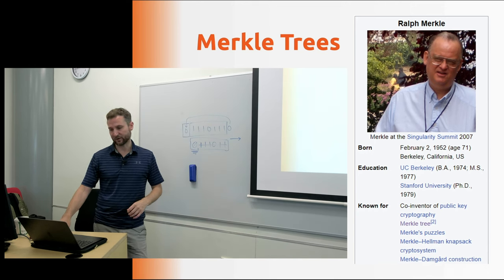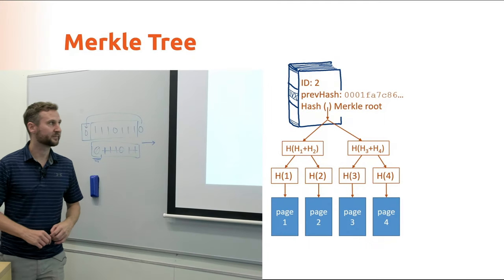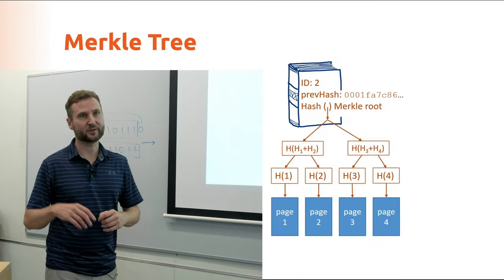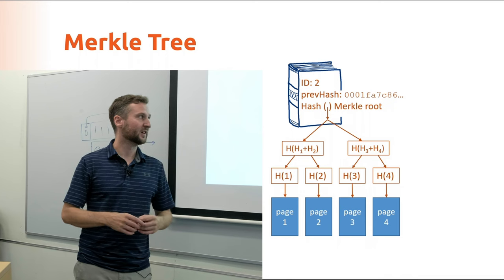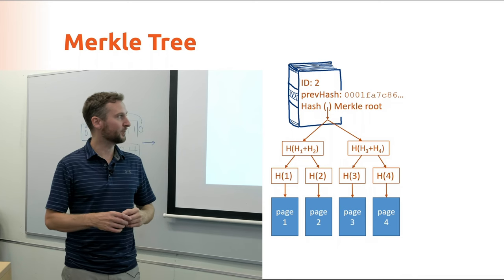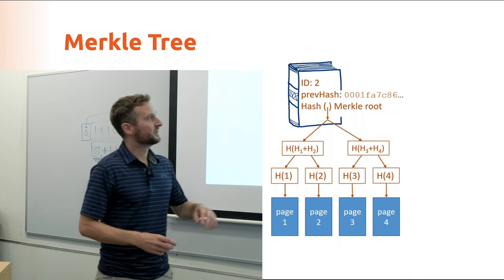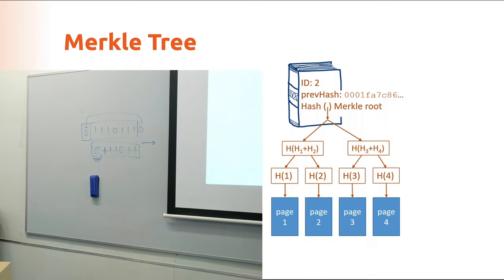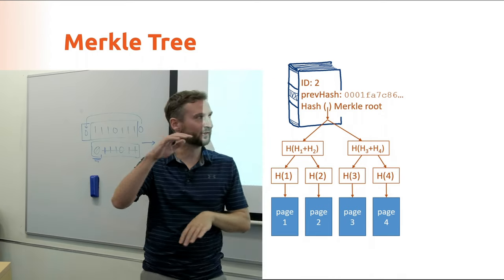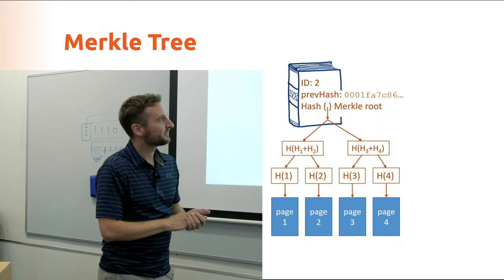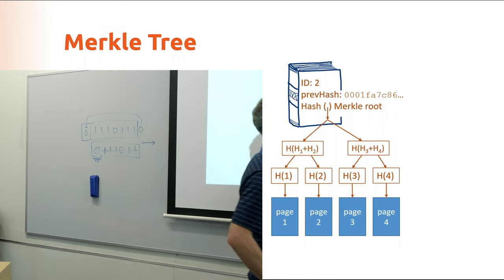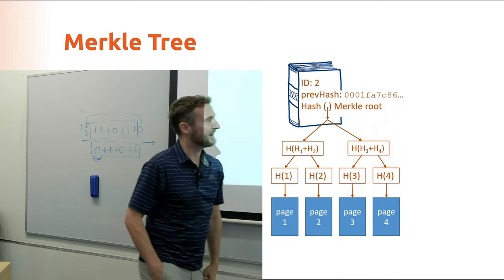And so what is a Merkle tree and how can we use it? It's just a data structure that's going to improve the efficiency of our blockchain. And so we've got a tree-like structure here. It's kind of like a tree that's been turned upside down. So the root is up top. And then we have some nodes that store the hashes, and then we have the information down here as the leaf nodes.